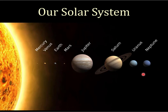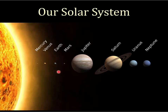One thing this diagram doesn't show is that all of the Jovian planets have rings — all of them. We all know Saturn has rings, but Jupiter has a ring system, and so do Uranus and Neptune. None of the terrestrial planets have rings — none of them do.